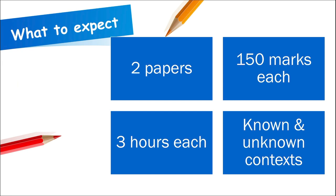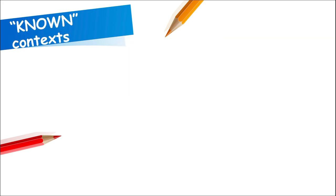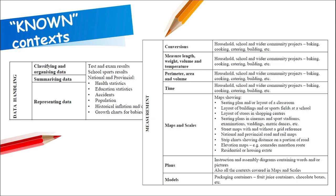Starting with what to expect: you'll be writing two papers, 150 marks each, three hours each, with known and unknown contexts in both papers. Examples of known contexts can be found in your exam guideline — the 2021 version — and the types of questions considered known contexts are listed there for your reference.